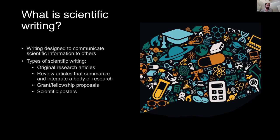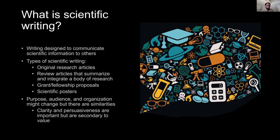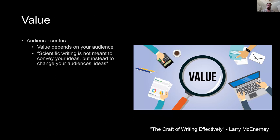The purpose, audience, and organization of these different types of scientific writing might change, but there are similarities. The two I want to get across are clarity and persuasiveness. But I think these come second to value. Value is audience-centric — your reader is who matters. You as the author don't matter as much; it's what your reader takes away from your work. The value of your work depends on the audience.